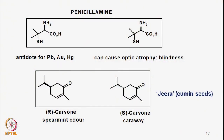We can also see many other examples where one enantiomer behaves differently than the other. For example, penicillamine has one asymmetric center. One enantiomer is an antidote for lead, gold, and mercury poisoning, while the other enantiomer can cause optic atrophy — that is, blindness.